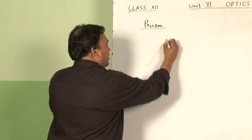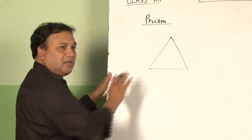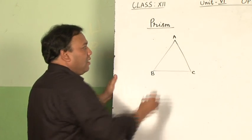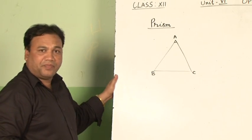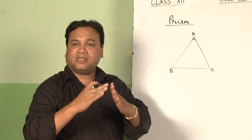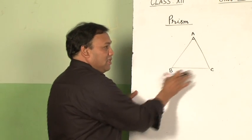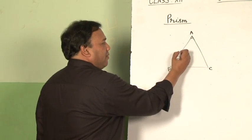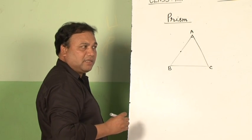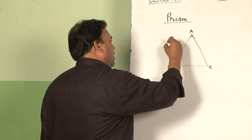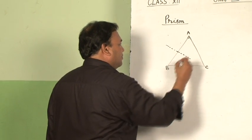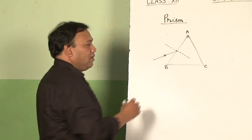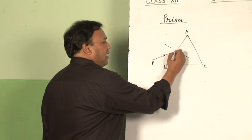I will draw the ray diagram showing the path of a light ray through a prism on the board. I am taking one equilateral prism ABC. This angle A is called the angle of prism. This prism is bounded by two refracting surfaces and is wedge-shaped. BC is called the base; AB and AC are called the refracting surfaces. I will select one point known as the point of incidence and draw a normal at this point. One ray of light is falling at this point.